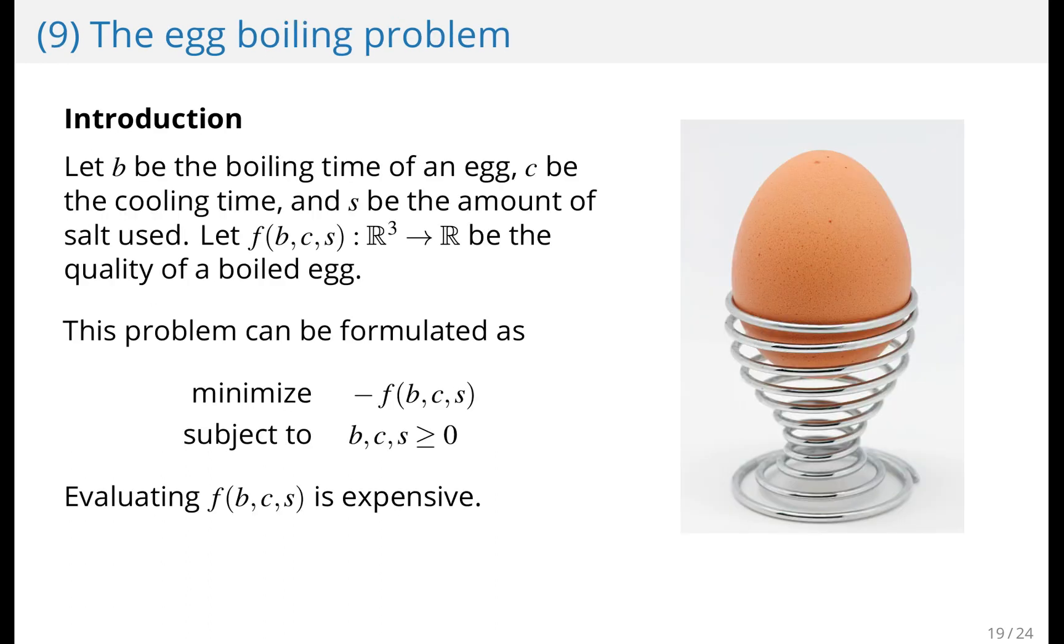The egg boiling problem. Imagine that you have an egg and you would like to figure out what the perfect boiling time and cooling time and the amount of salt is. So you have the satisfaction quality of an egg, and you would like to maximize it or minimize the negative. Evaluating this function is expensive. So it takes a lot of time to boil an egg. In industrial applications, gathering data might also be really expensive. So you can't evaluate this function as much as you'd like.